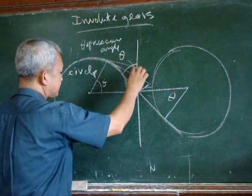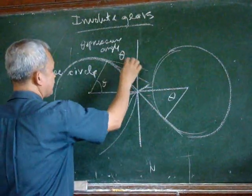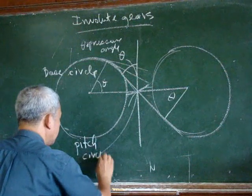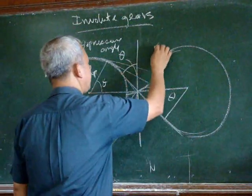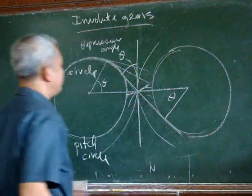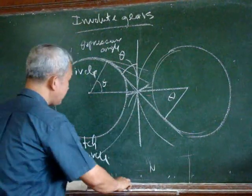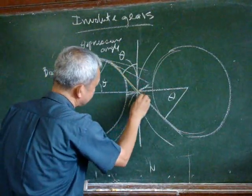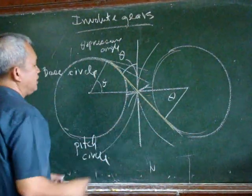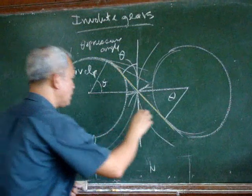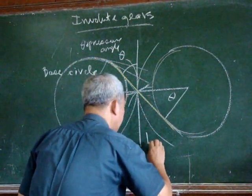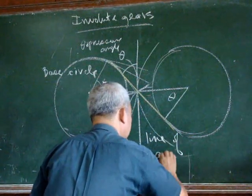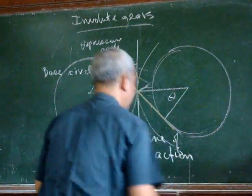And by the way this circle is now our pitch circle. Same way as we can have the pitch circle here. So this line here that is tangent to the base circle defines to us our line of action.